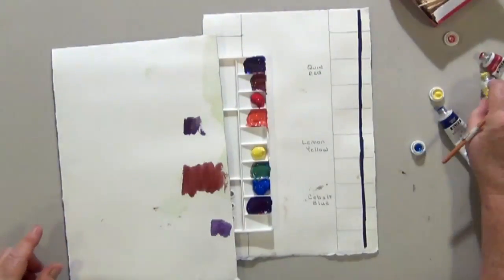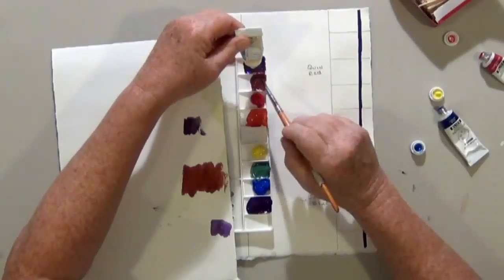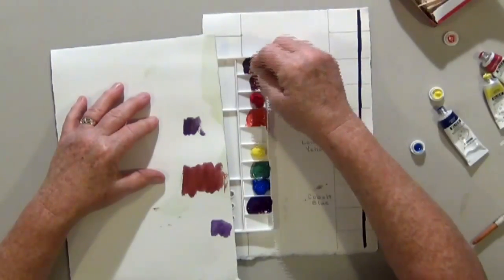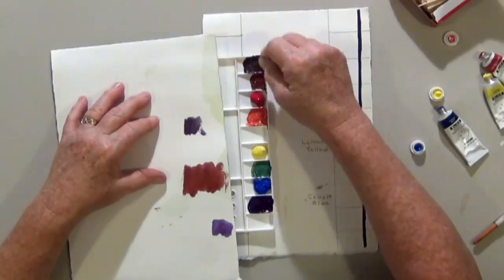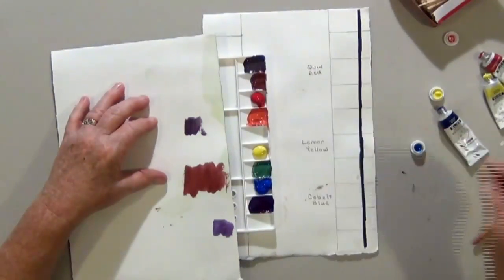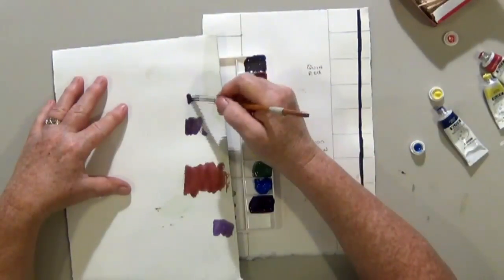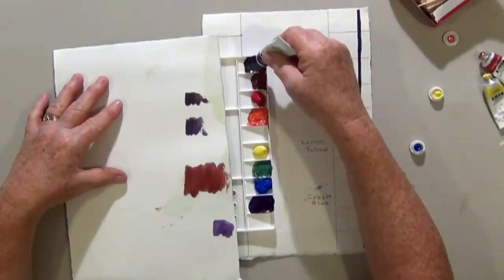Still a little bit purple. I'm going to add just a tiny bit more yellow. See if I like that better. Now we're back to brown. I'm going to add a little bit more blue.